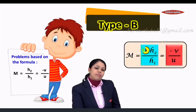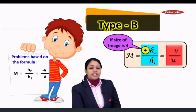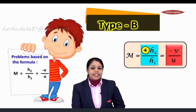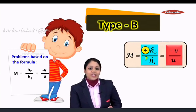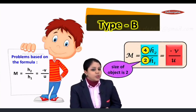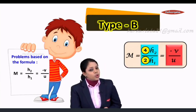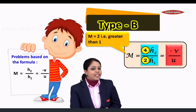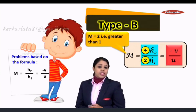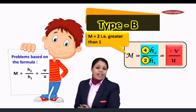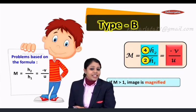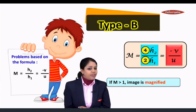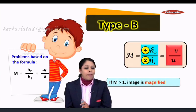Let us consider some values. For example, if the size of the image is 4 and the size of the object is 2, then 4 divided by 2 will give you 2. So here magnification is 2. Whenever magnification is greater than 1, we say that the image is magnified. So if M is greater than 1, image is magnified.